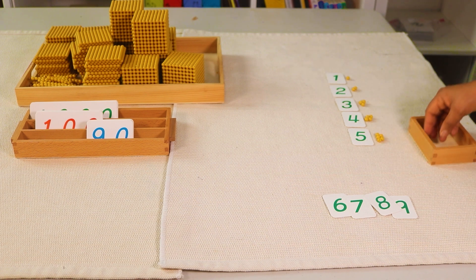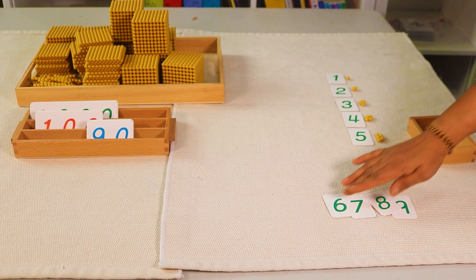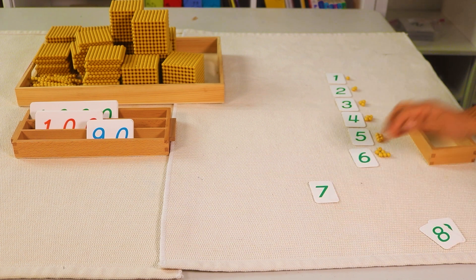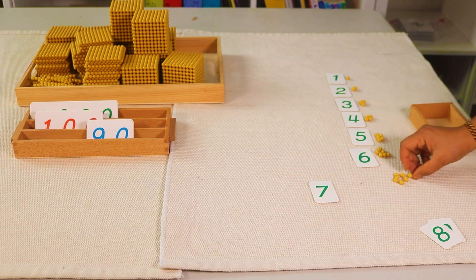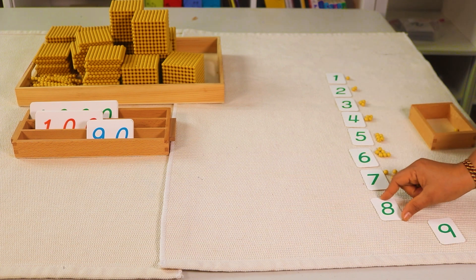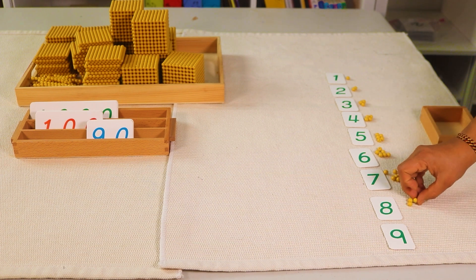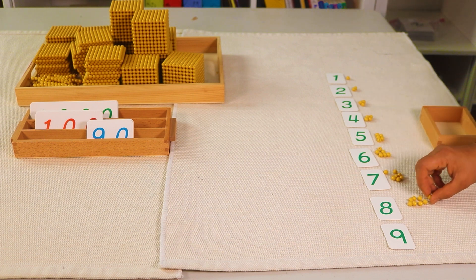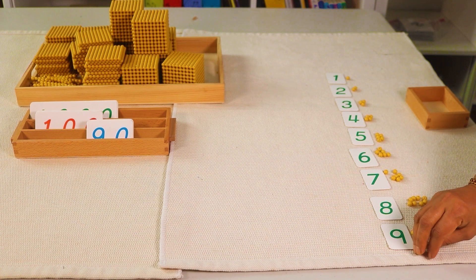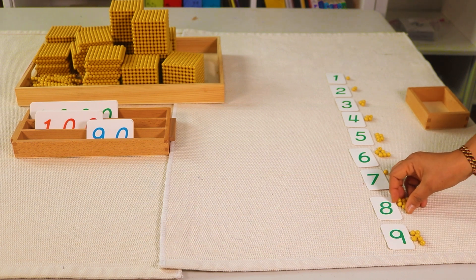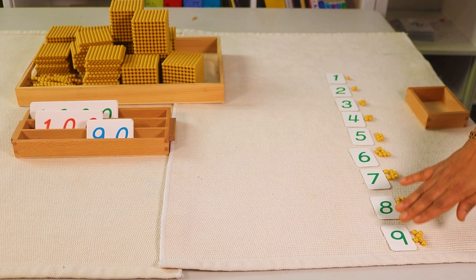Let's continue. What comes after five? Six: one, two, three, four, five, six. This is six. Then seven: one, two, three, four, five, six, seven. This is seven. Likewise eight and nine.